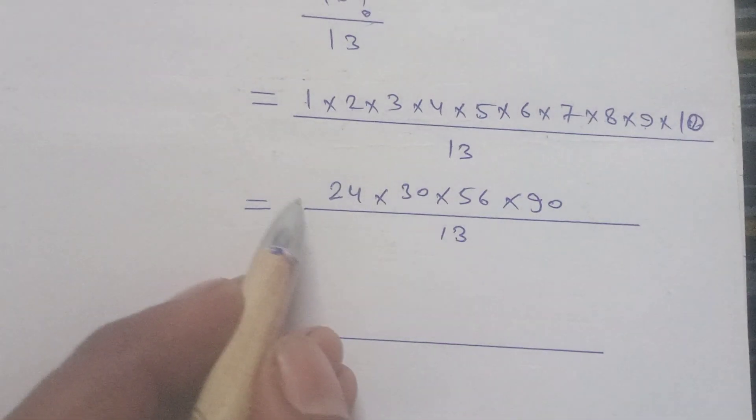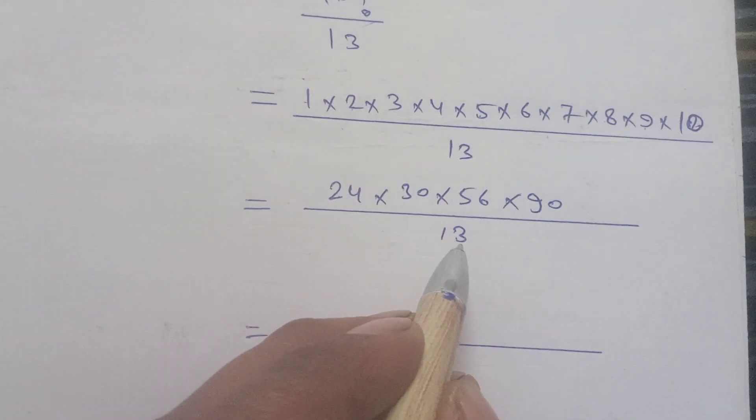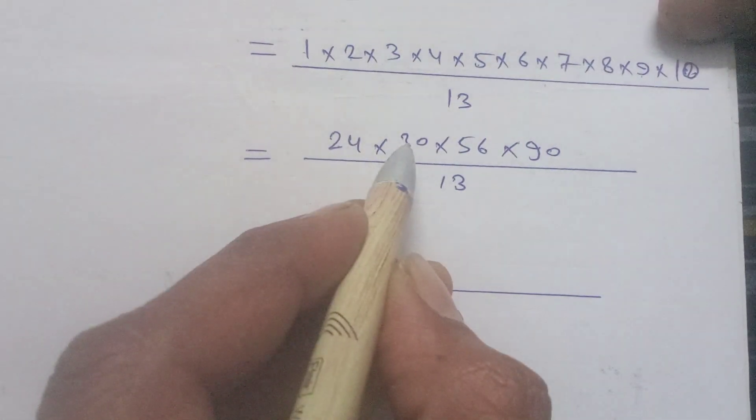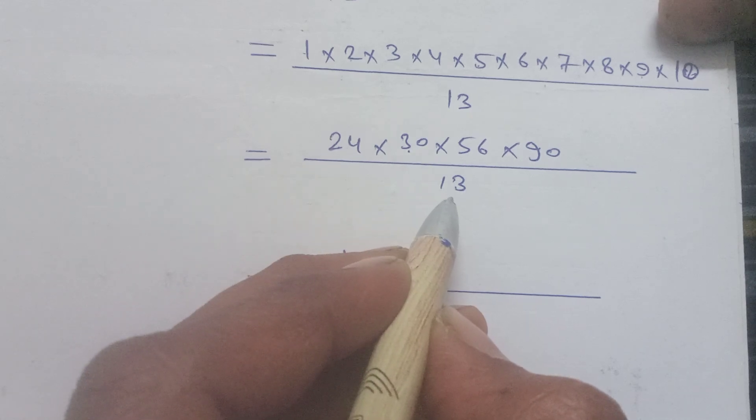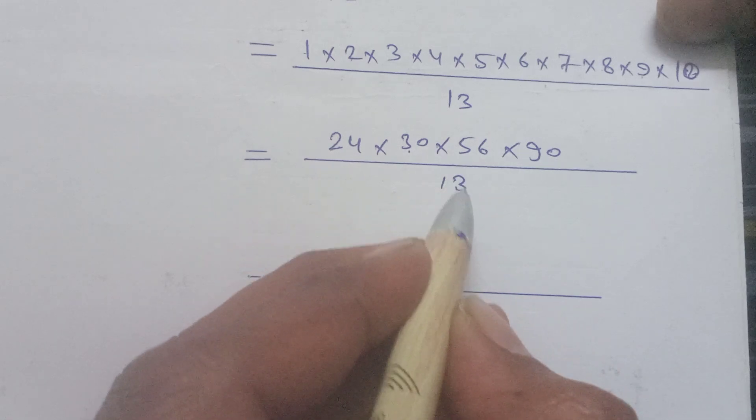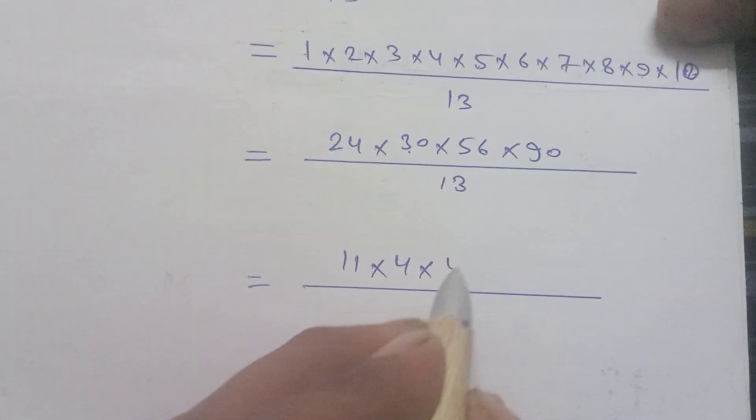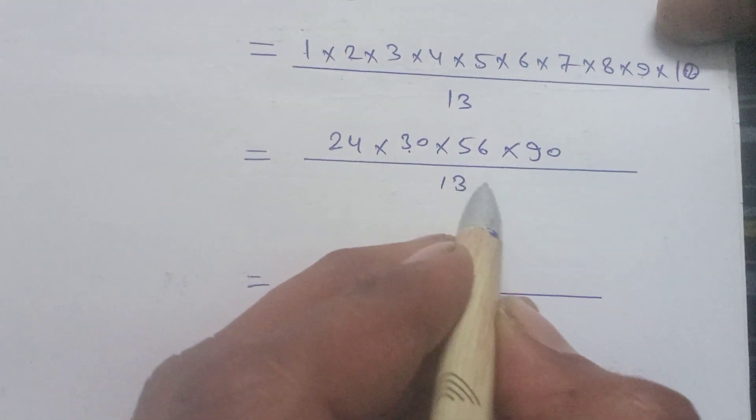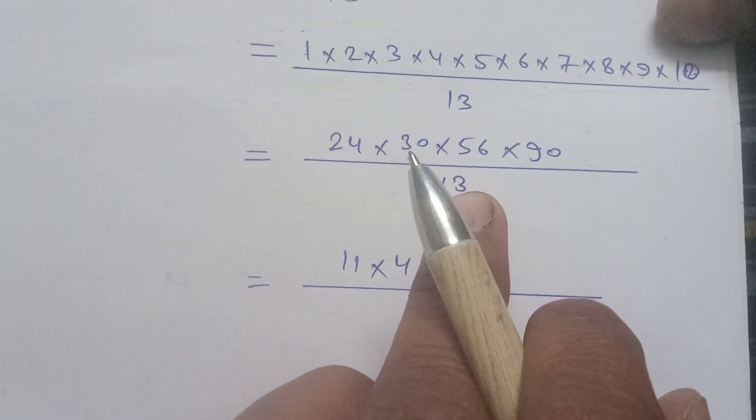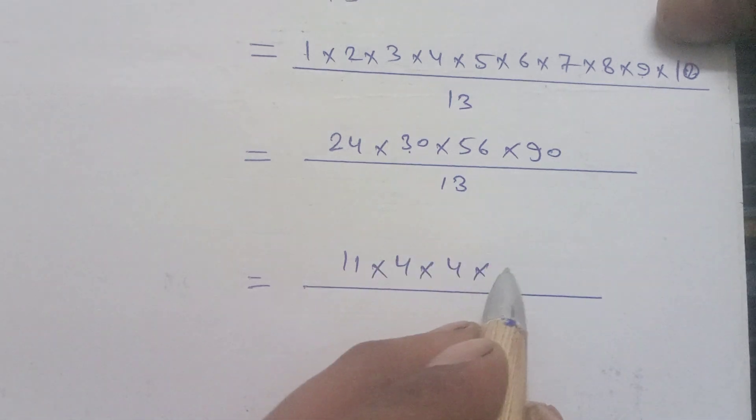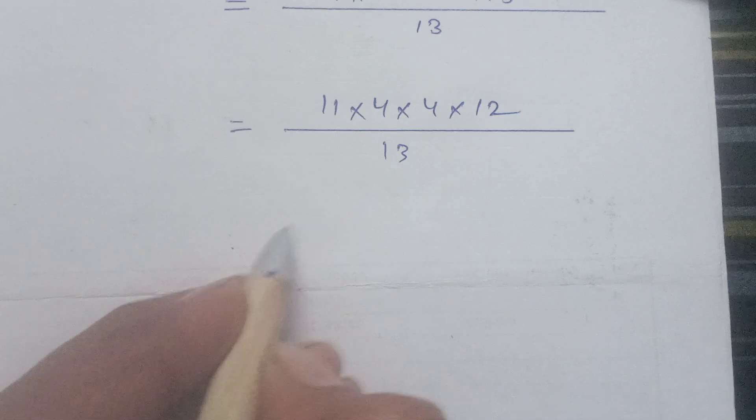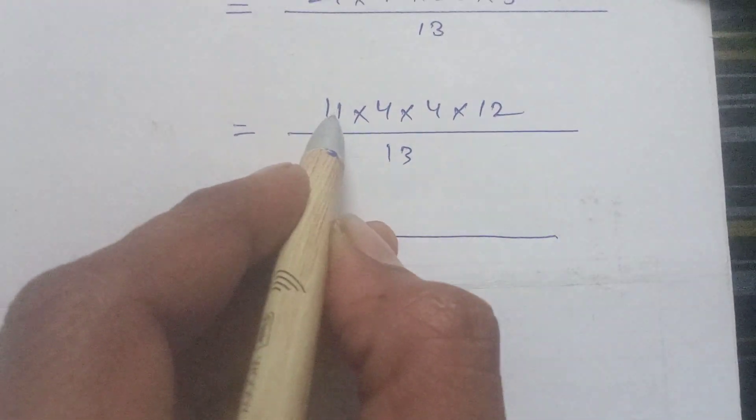24 divided by 13, so remainder will be 11. 30 divided by 13, so remainder will be 4. 56 divided by 13, remainder will be 4. And remainder will be 7, same 6. 13 times 6 is 78, so remainder will be 12.